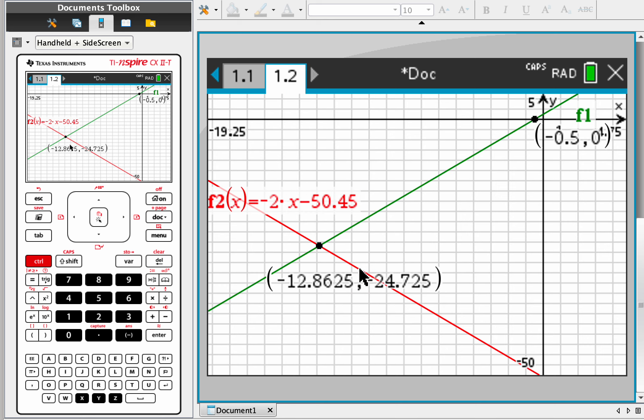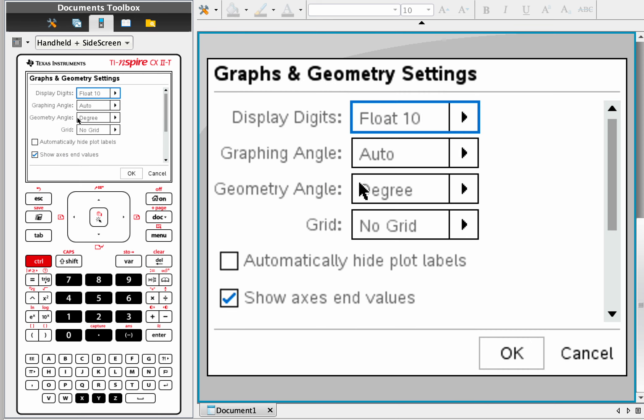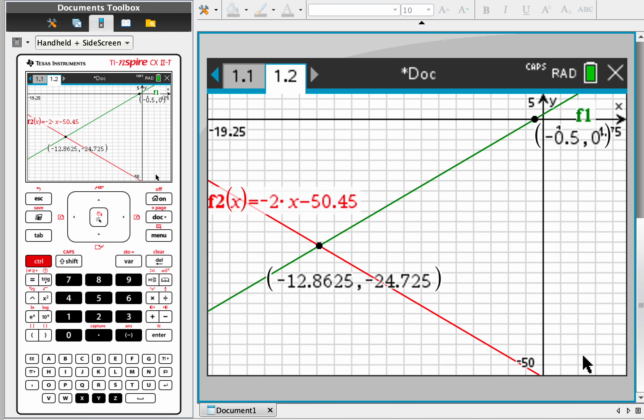Now, on yours, you may not see so many digits. Maybe you only see 12.9, and if you want to see more, just go to menu, settings, and change this from float 3 to something higher. Why that might be relevant is you may want to see more digits, and you don't want it to just round too early in your answer.